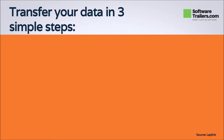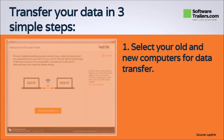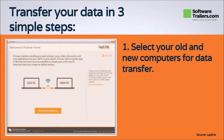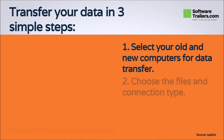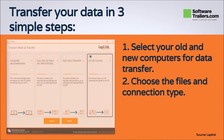By following three simple steps, you will be able to transfer your files from one computer to another. First, start the transfer process by installing PC Mover on both computers. The software will identify both pieces of equipment and request the direction the transfer will take place. Next, select the types of files, settings, and user profiles you want to transfer to your new PC using the wizard. You can also choose to have your transfer made with Wi-Fi or by cable connection.